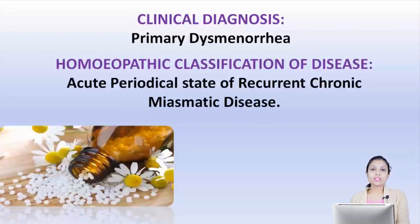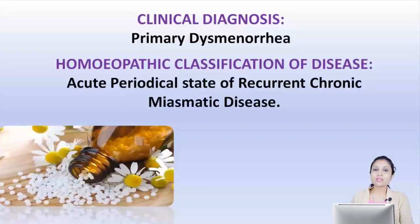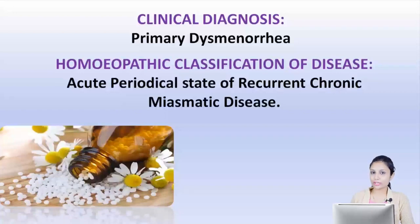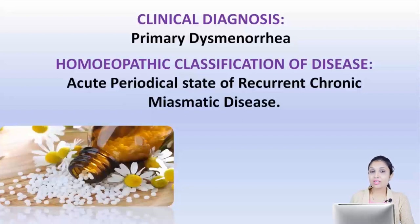The diagnosis given is primary dysmenorrhea, which means there is dysmenorrhea or painful menses without any organic cause. The general feeling is that periods are supposed to be painful, but this is a mistaken belief. Periods are not supposed to be painful — they are only supposed to be mildly discomforting. Any kind of pain in the lower abdomen or back during menses is considered abnormal.